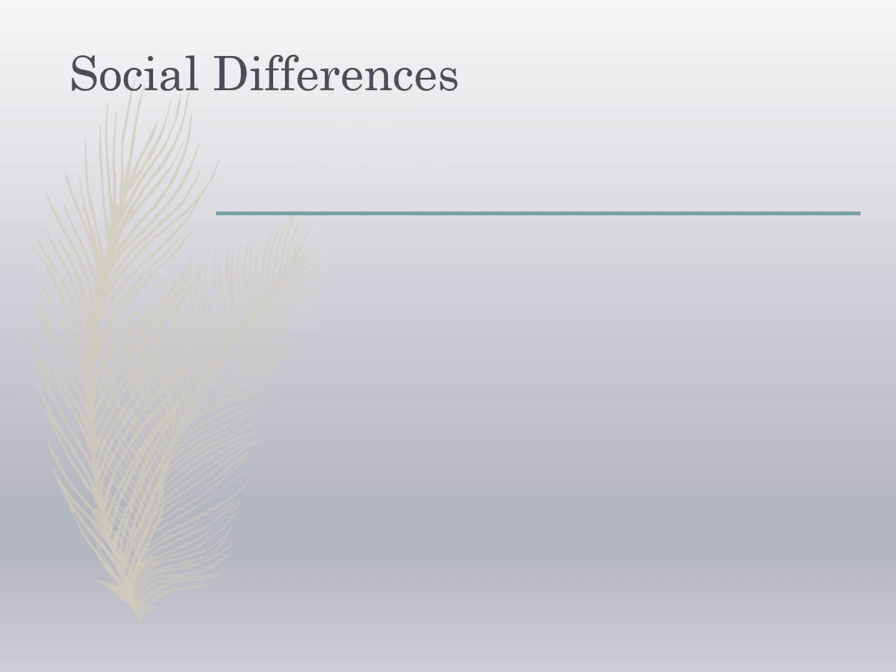Now we will discuss another topic: social differences within and beyond the framework of caste. You are probably familiar with the term caste, which refers to a set of hierarchical social categories. The ideal order was laid down in the Dharmashastra and Dharmasutra. Brahmans claimed they were ranked first, while groups classified as Shudras and untouchables were placed at the very bottom of the social order.